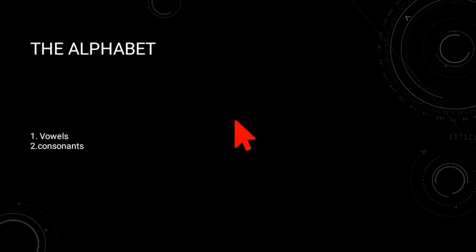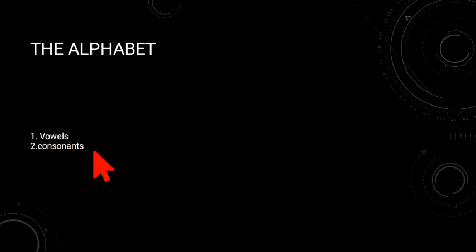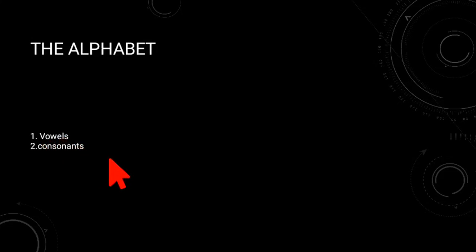The alphabet is divided into two types. How many types? Two types. First one: vowels. Second one: consonants. Vowels and consonants.